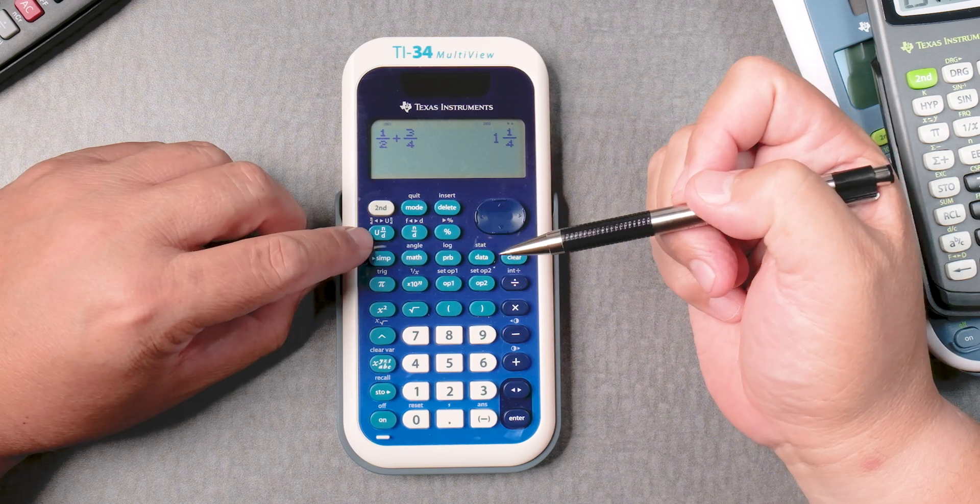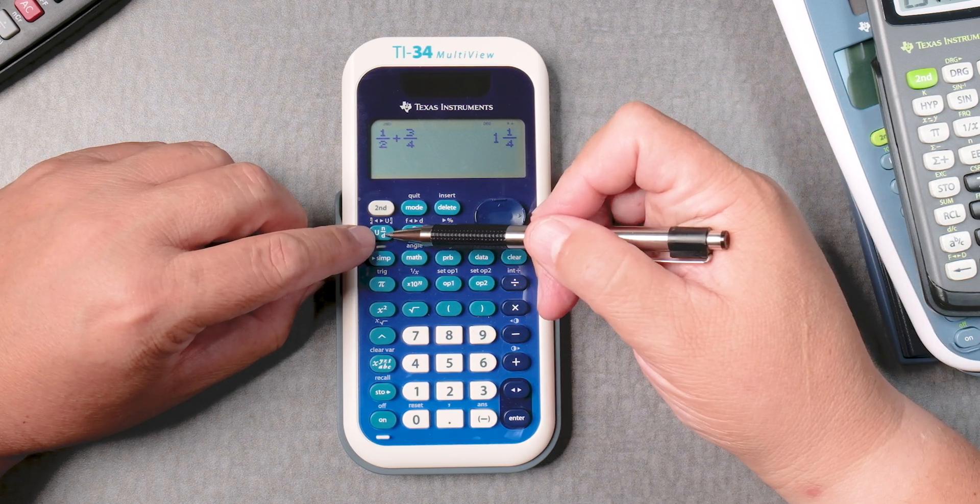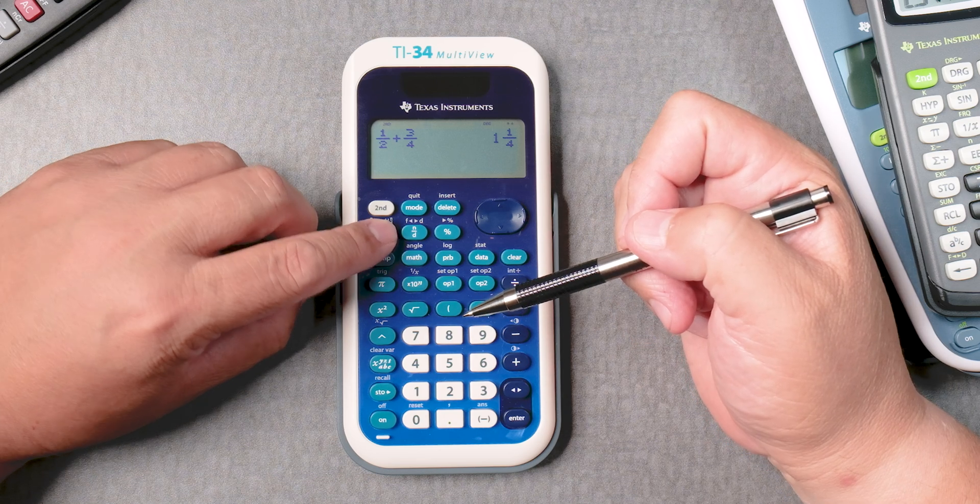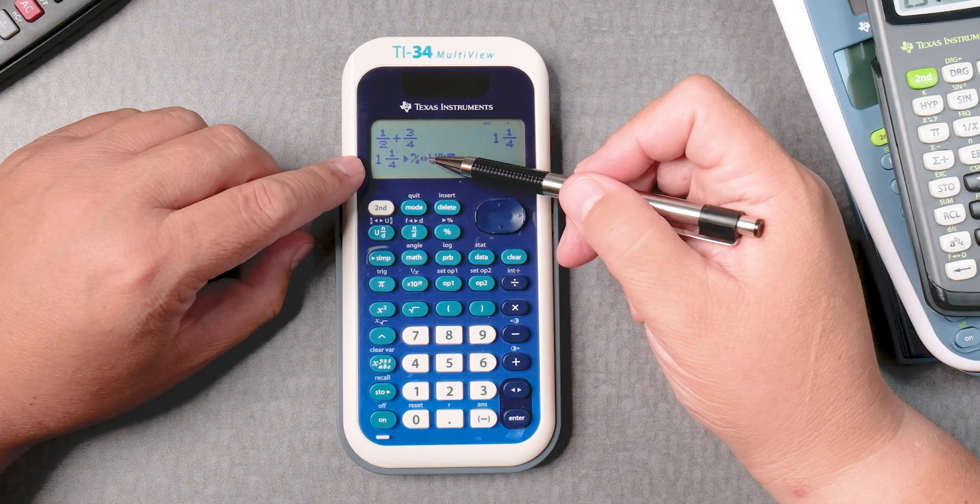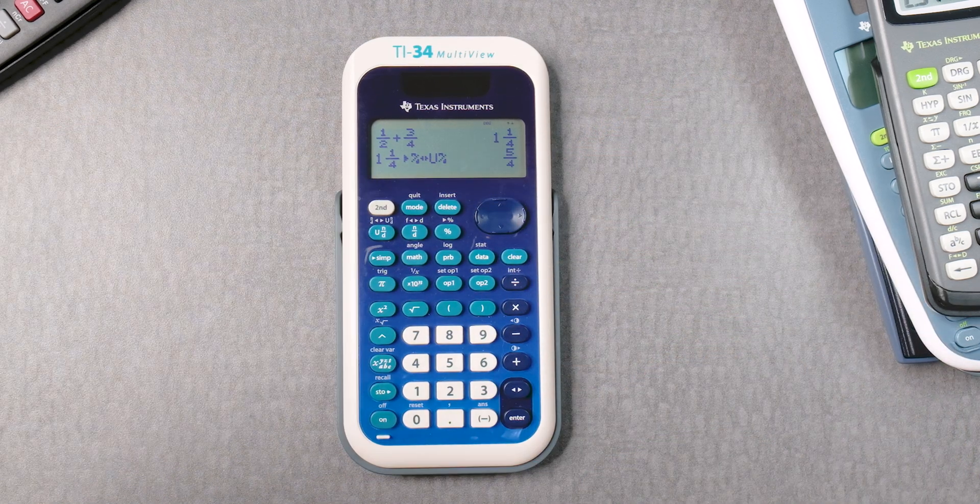so you go 2nd, and then U N D, which is the mixed number button. It's taking the answer and changing it, and there it is, 5 over 4.